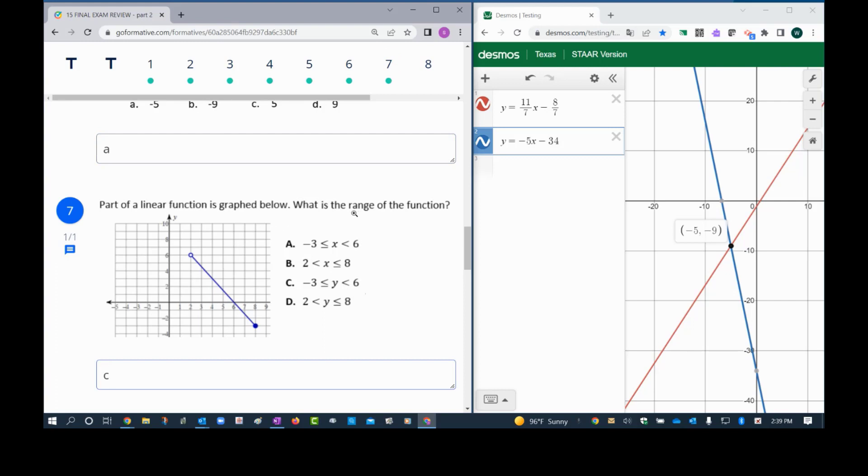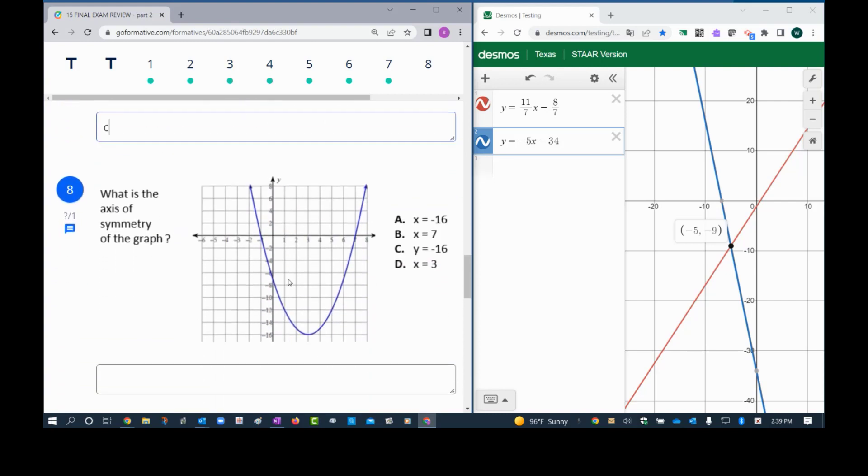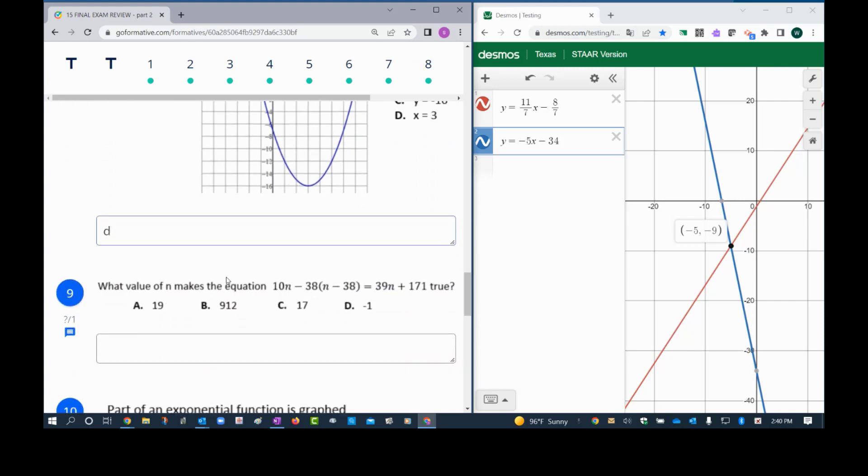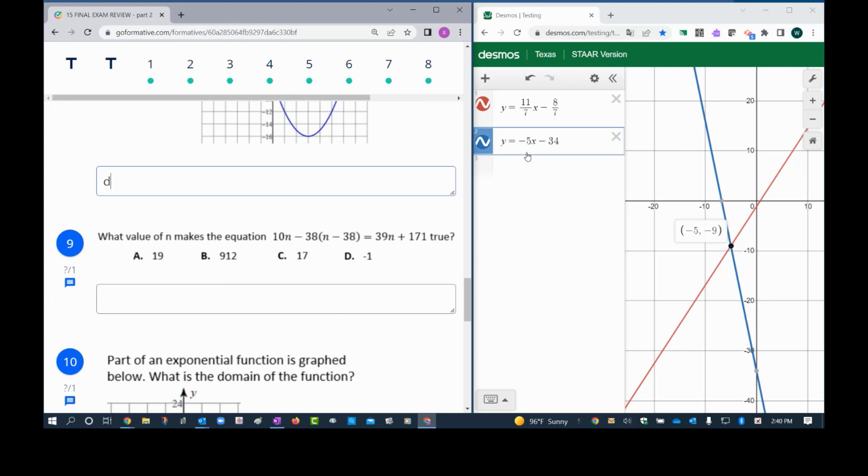Notice in this problem when you first started, because you're looking for the range, you could eliminate letter A and B because they both have x's and we're looking for the range which is y values. Next problem is the axis of symmetry. Axis of symmetry always starts with x, so I know I can eliminate letter C. Axis of symmetry is the line that goes right in the middle of the parabola which is right here, which is x equals 3, so letter B.